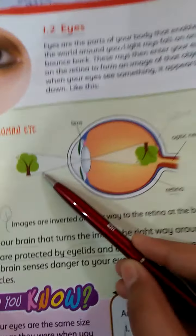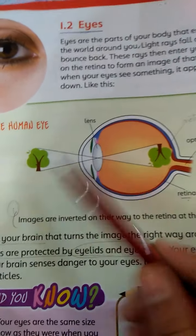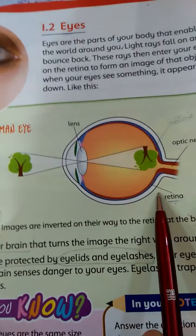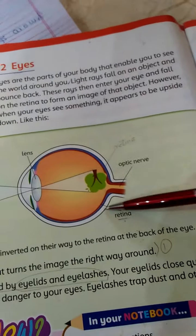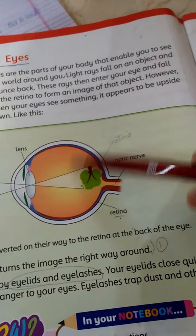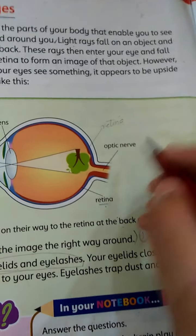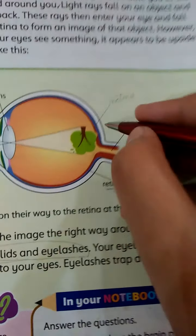I will show you a human eye diagram. The light rays fall on the retina, and the retina forms an image in your eyes. Now let's study the parts.